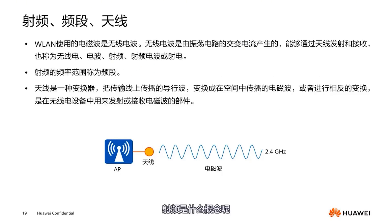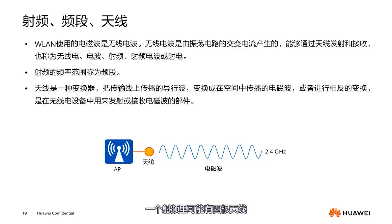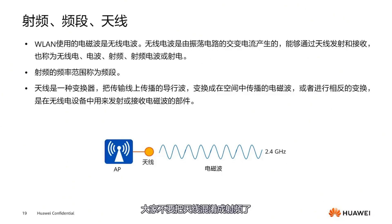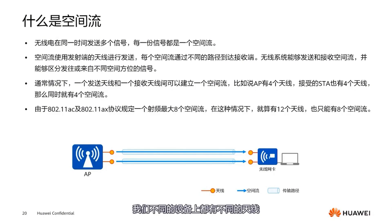Next, let's look at the concept of radio frequency. Radio frequency is the use of antennas to transmit and receive radio waves within a fixed frequency range. An AP may have multiple radio frequencies — for example, an AP with two radio frequencies is referred to as dual radio. A single radio might have four antennas, so antennas are physical hardware. The band is the frequency range of the radio. Don't confuse antennas with radio frequencies.